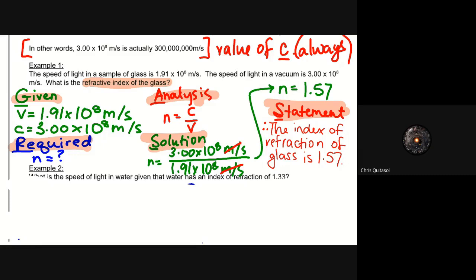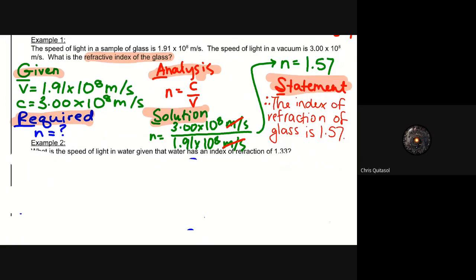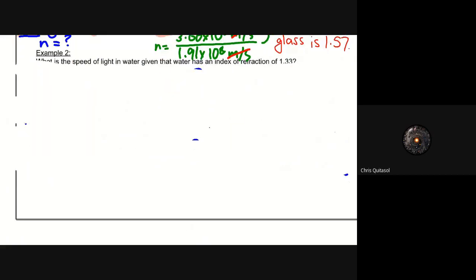So this is one example where we're trying to solve for the refractive index of a substance, in this case glass, using the speed of light in a vacuum, that constant, as well as the speed of light in that sample.